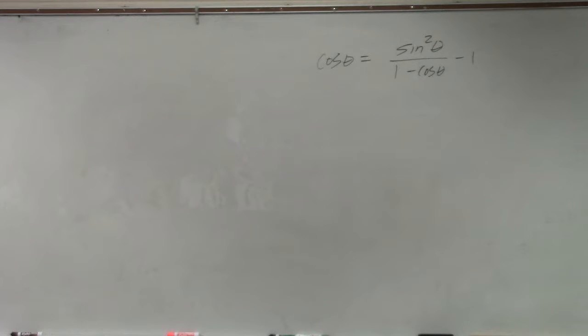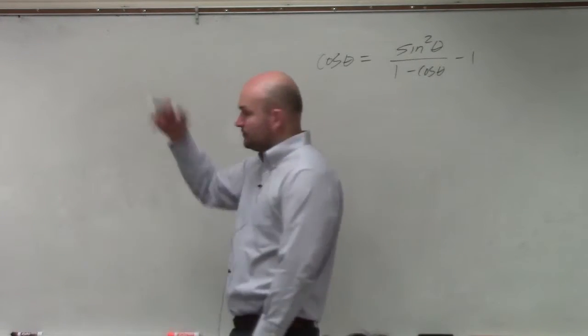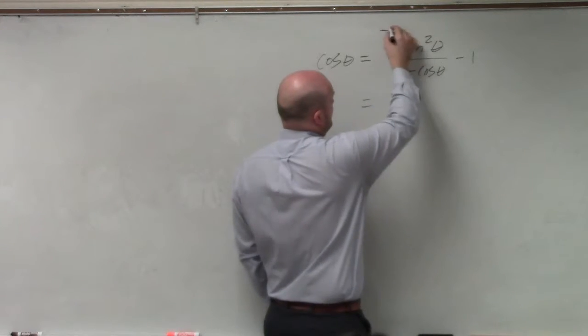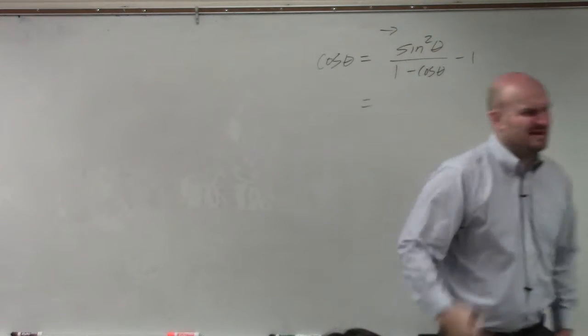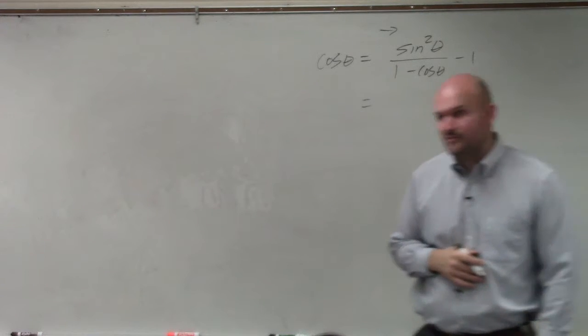So in this example, we have cosine of theta equals sine squared of theta divided by 1 minus cosine of theta minus 1. We want to pick our sides. Obviously, I'm going to want to pick the right side. It's much easier to make the right side look like the left side than to make the left side look like the right side. Would everybody agree with me on that?